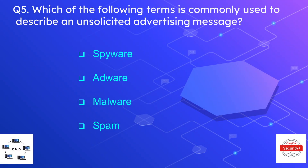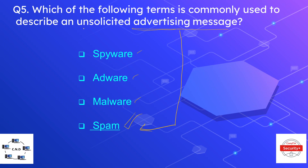Question number five: which of the following terms is commonly used to describe an unsolicited advertising message? The options are spyware, adware, malware, or spam. The correct answer is spam. Most email users routinely receive messages advertising different companies or services — these unsolicited messages are categorized as spam.